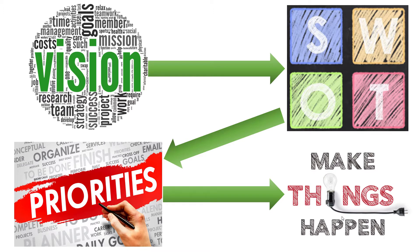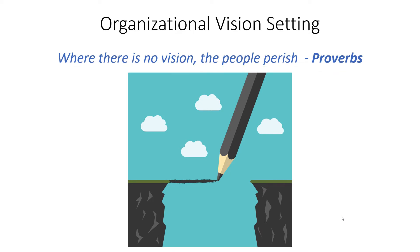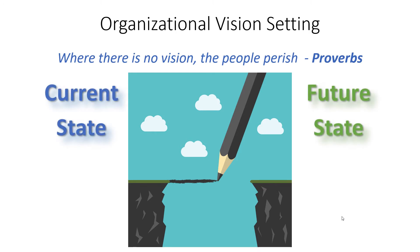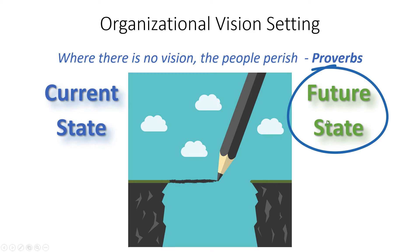Step number one is all about creating a vision. I love this quote from the book of Proverbs: where there is no vision, the people perish. That quote is identical for businesses. Every business needs a vision and a reason for existing, and a vision for where you want to go in the future. When you're creating a vision, you should think about two things: first, the current state of your business — where are you today — and where do you want to go in the future, what do you want to accomplish and achieve?